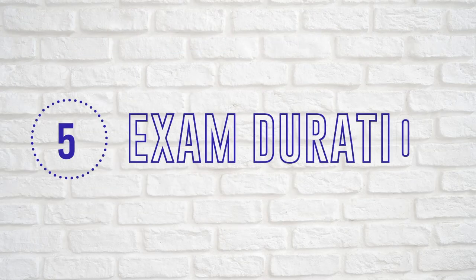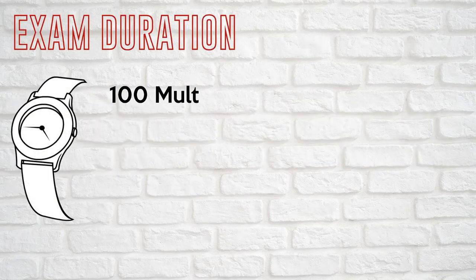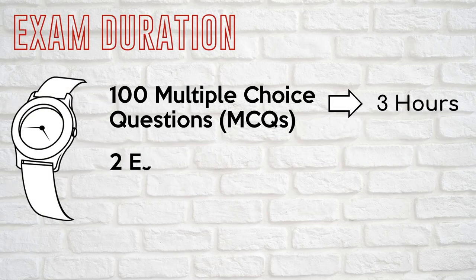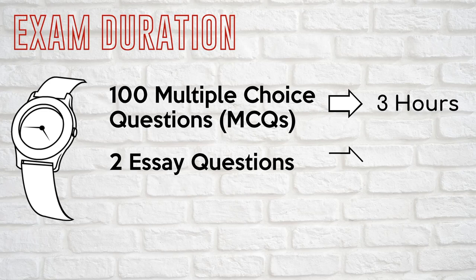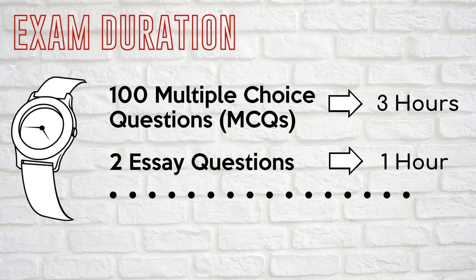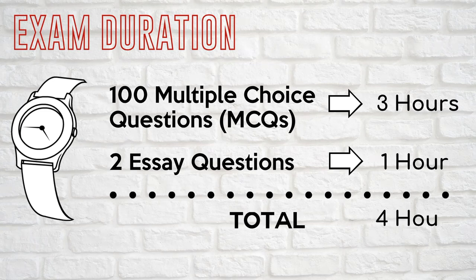Now let's talk about the exam duration. You have three hours to complete the 100 MCQs and only one hour to complete the SA section. As previously mentioned, you cannot proceed to the SA section unless you score at least 50% of the MCQs. Similar to Part 1, the Part 2 exam takes about four hours in total.